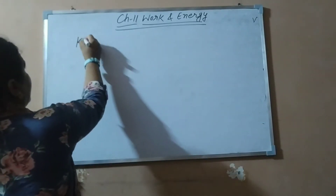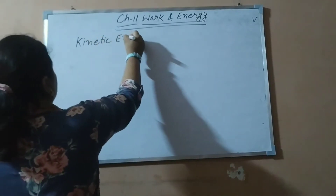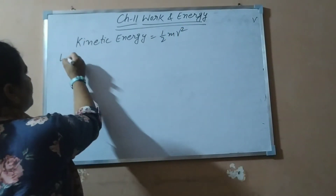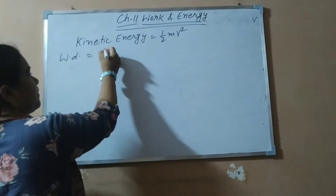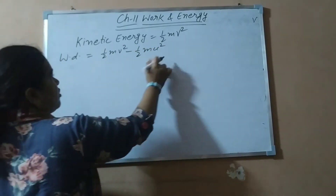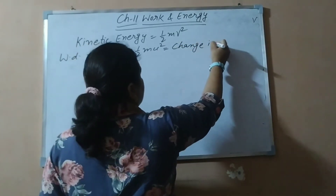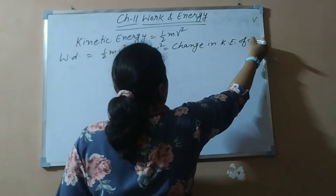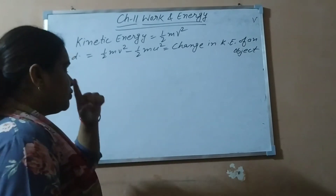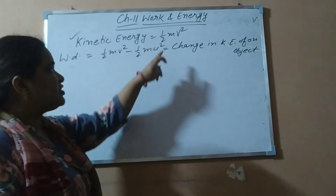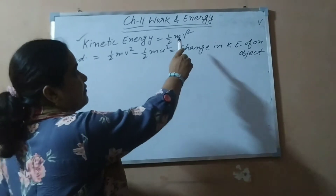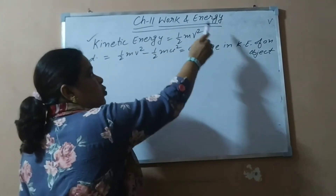Earlier we have done that kinetic energy is given by the formula half mv squared. Moreover, we have also done that the amount of work done on a body in motion can be calculated by the formula half mv squared minus half mu squared. This is also known as the change in kinetic energy of an object. When velocity is changed, kinetic energy changes with the square of velocity.